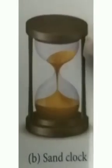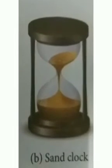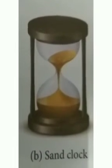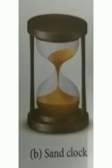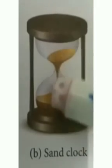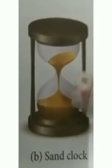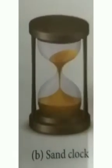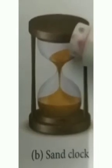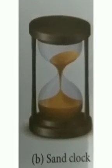Another early device for measuring time was the sand clock. Sand clock is also known as sand glass or hour glass. The sand clock uses the flow of sand from one glass bulb to another to measure time. The length of time taken by the sand to pass from one bulb of the sand clock to the other gives a constant time interval.